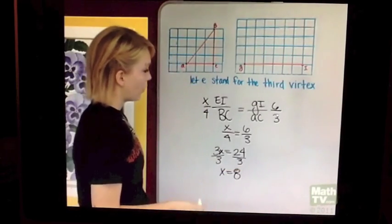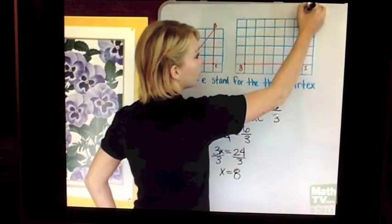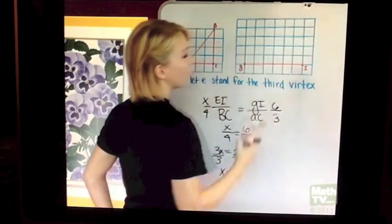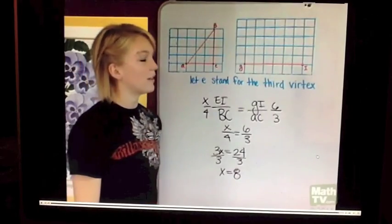That means we know that EI is 8 squares apart. That will probably be somewhere up over here. We'll have our E. We'll count 8 squares up and then we'll have our third triangle once we connect the dots.